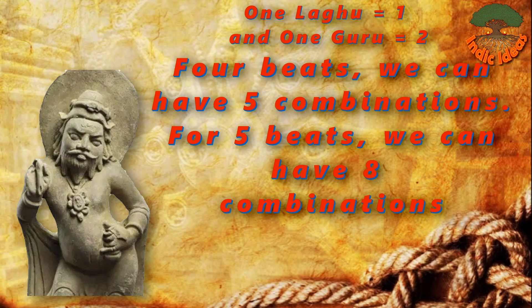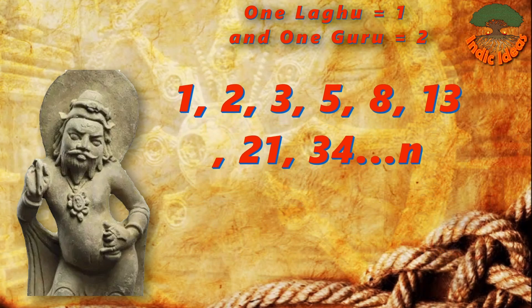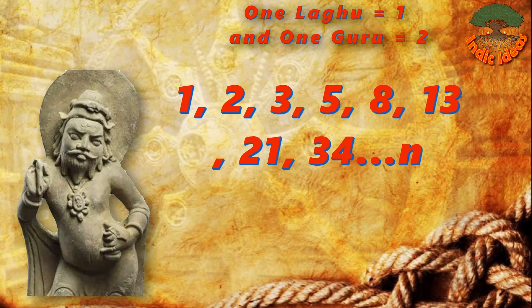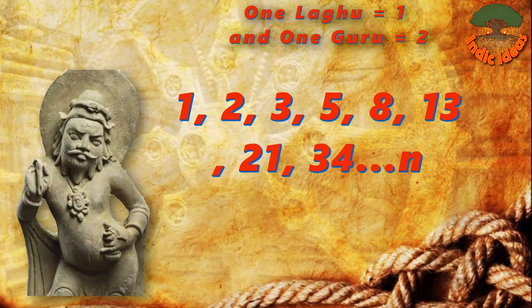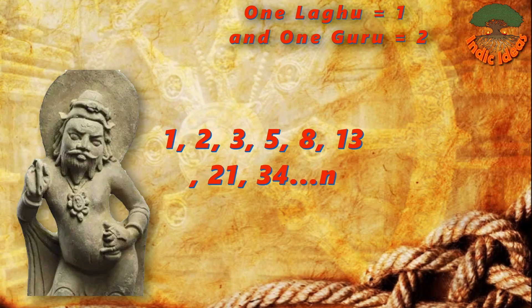Similarly, for four beats we can have five combinations, and for five beats we can have eight combinations, and so on. Combining these: 1, 2, 3, 5, 8, 13, 21, 34 — continuing till infinity. This is nothing but the Pingal series, which the western world refers to as the Fibonacci series.